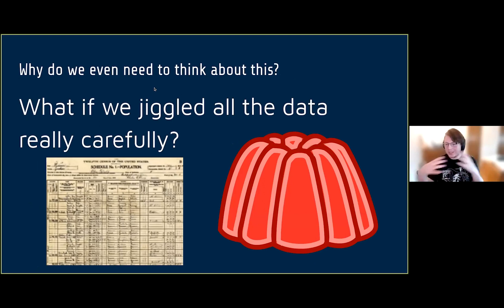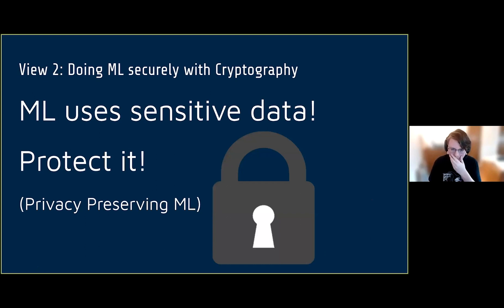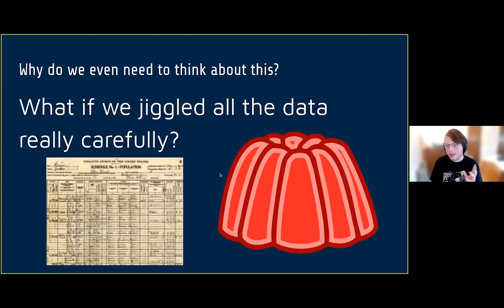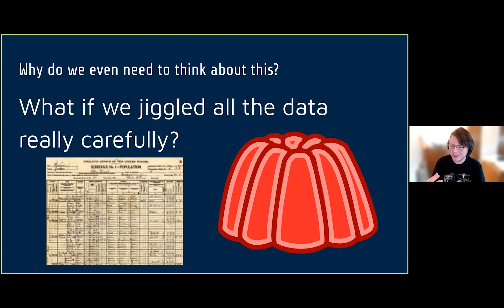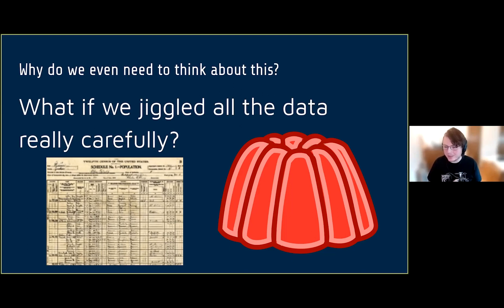Why do we even need to think about this? Well, if you have census data and you want to do some machine learning on it, you don't want to accidentally leak information about a real person. A census record in the U.S. census has tons of personal information — your name, your social security number, your family that lives with you — tons and tons of information that you don't want to leak.